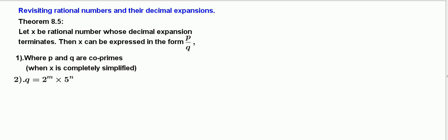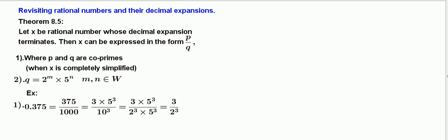Example: 0.375 can be written as 375 divided by 1000. 375 can be written as 3 × 5³, divided by 1000 which equals 10³.